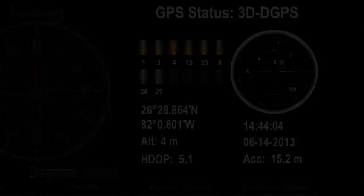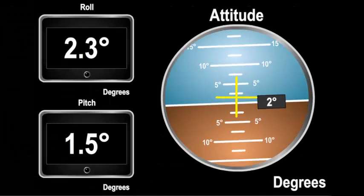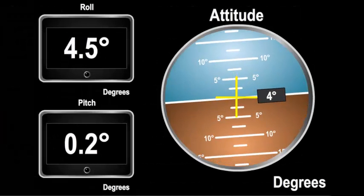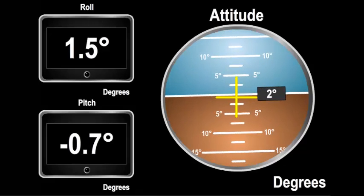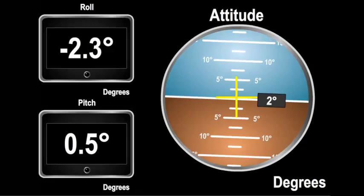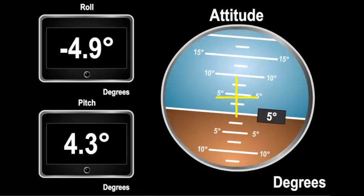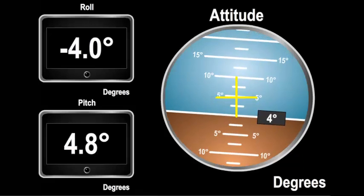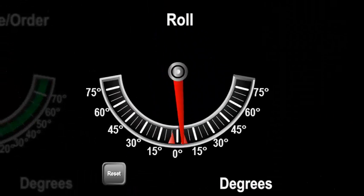Another interesting component gives the ability to view the vessel's roll and pitch. This can be done on digital displays or in the combined attitude component, which combines the two values into a single graphical display. There is also an inclinometer for roll, which may be configured to have minimum and maximum marks.